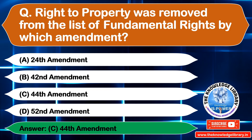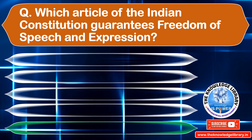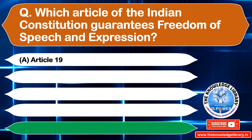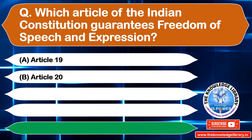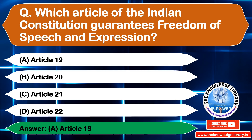The next question is: which article of the Indian Constitution guarantees freedom of speech and expression? Option A: Article 19, Option B: Article 20, Option C: Article 21, Option D: Article 22. The correct answer is Option A: Article 19.